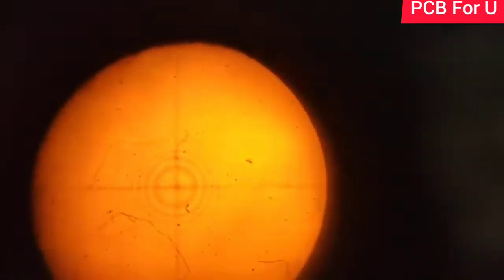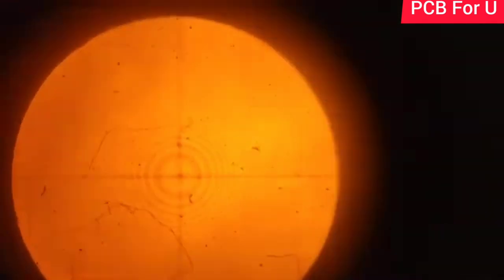The center is bright, after that dark, bright, dark, bright like that. We can get concentric circular rings.